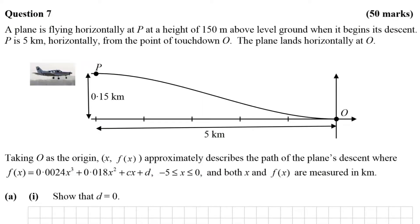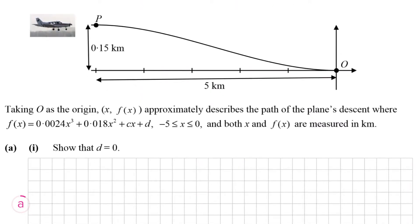So here's our question. We're dealing with a plane flying horizontally at P at a height of 150 meters above level ground and it begins its descent. P is 5 kilometers horizontally from the point of touchdown O and the plane lands horizontally at O. Taking O as the origin, x f(x) approximately describes the path of the plane's descent, where f(x) is equal to this function here and x is greater than or equal to minus 5 and less than or equal to 0. Both x and f(x) are measured in kilometers.